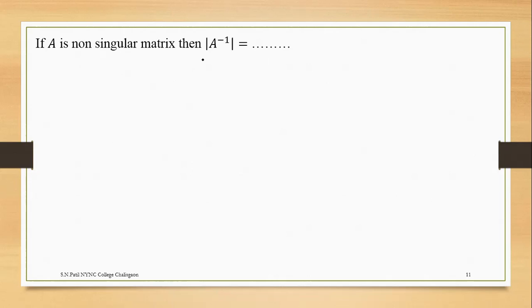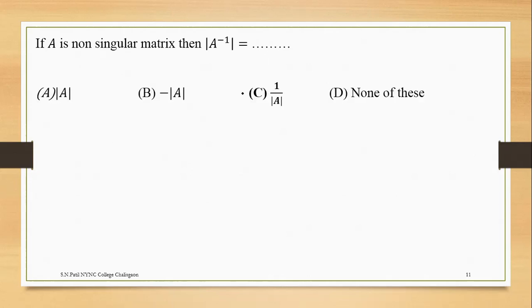If A is a non-singular matrix, then the determinant of A inverse is equal to 1 upon the determinant of A.